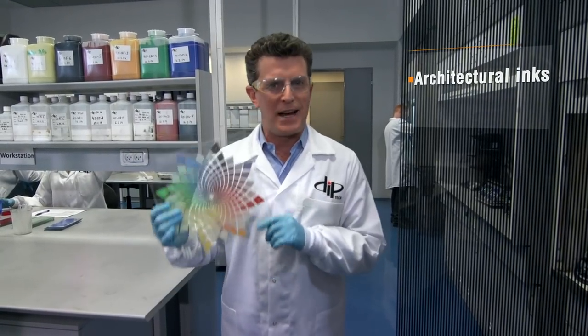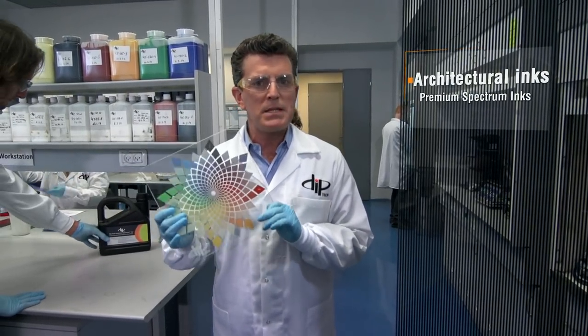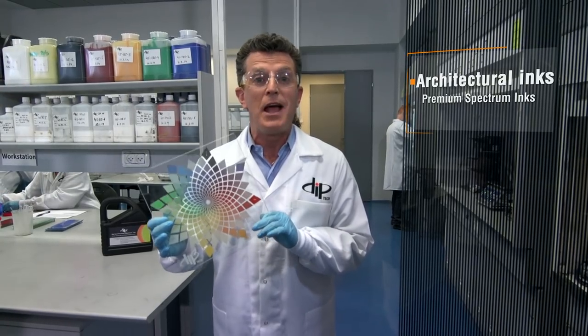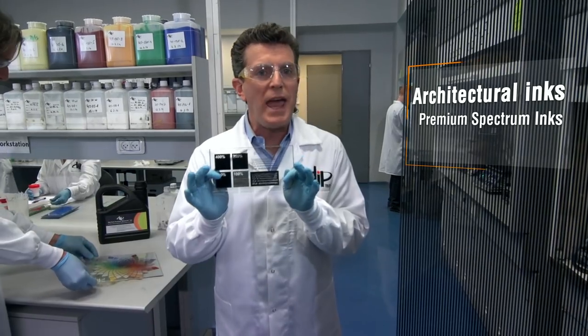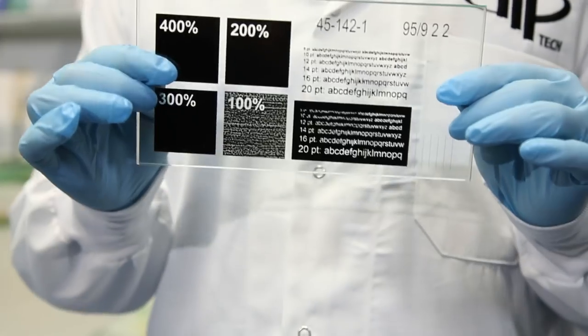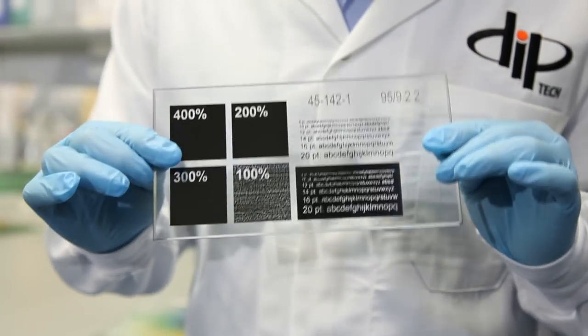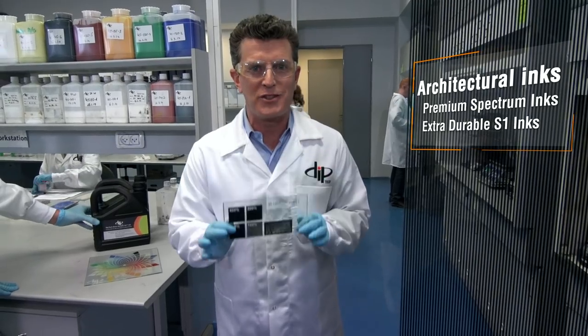These are the architectural inks. The premium spectrum inks have high performance, long-lasting durability, and built-in gloss. They're also the extra durable S1 inks with enhanced resilience and are specially designed for printing on the external side of glass.